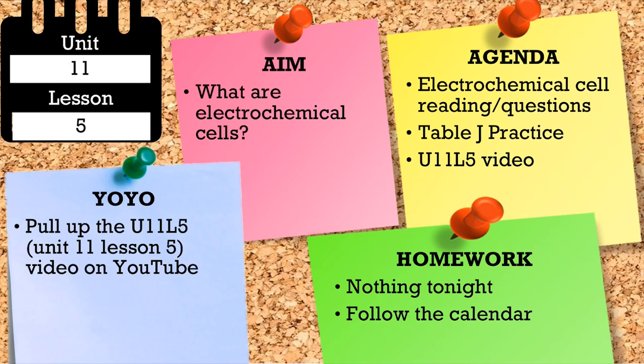Welcome back. This is lesson 5 in unit 11, which is redox. Up until this point we've talked about what redox is, oxidation and reduction, how to calculate oxidation numbers, how to write half reactions, how to balance them, and how to write balanced redox reactions. We're going to take a slight pause on that, introduce the second main part of this unit, and then throughout the rest of the week and next week we'll combine all of them.